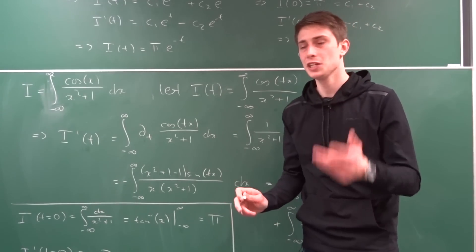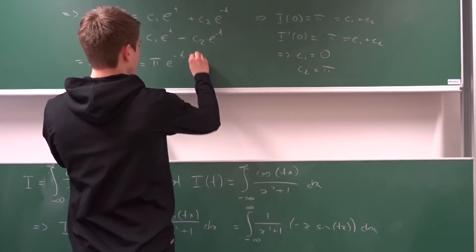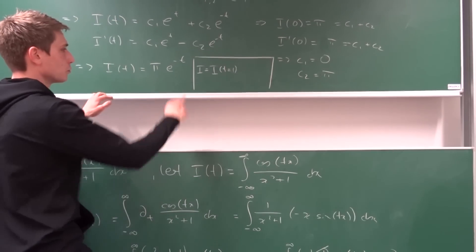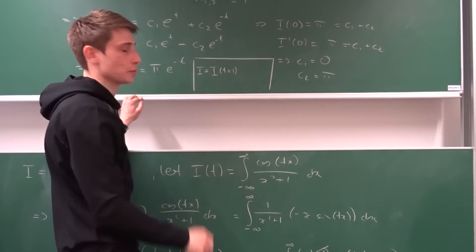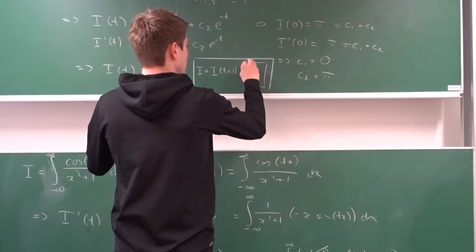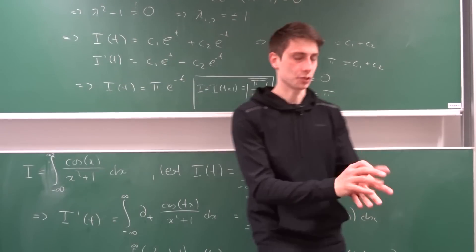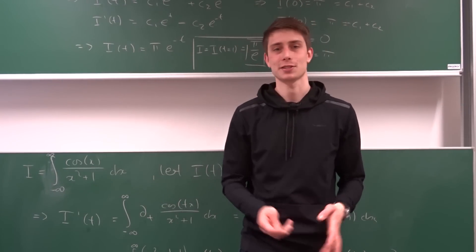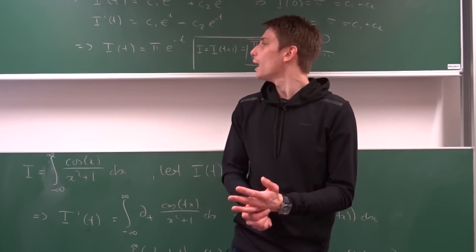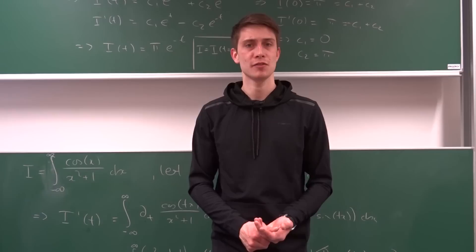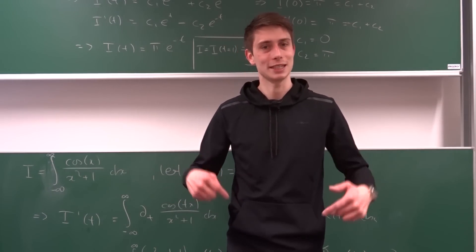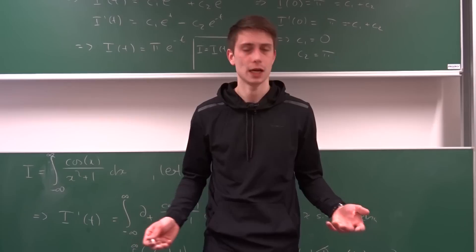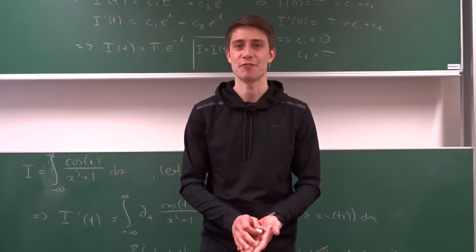We go back to the original integral: I equals I(t) at t = 1, which gives pi·e^(−1) = pi/e. That's the final answer. This is the second method — a bit faster than using Laplace transforms. It's quite fun turning integrals into differential equations using Feynman's technique. If you enjoyed this video, please like and subscribe. Support links are in the description. Have a flamboyant day, see you!